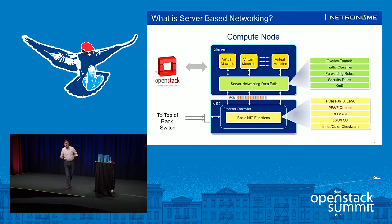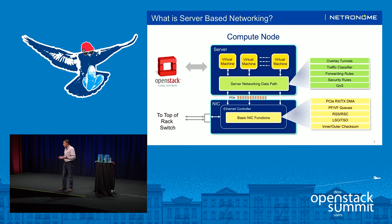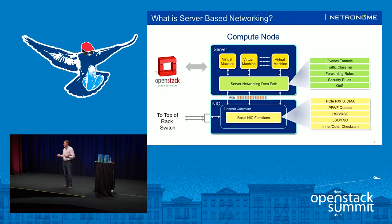In some cases, the basic NIC functions include things like basic offloads — RSS, as an example, or LSO, checksum offloads, things like that. And then there are specialized offloads that some NICs do for things like storage and so on.